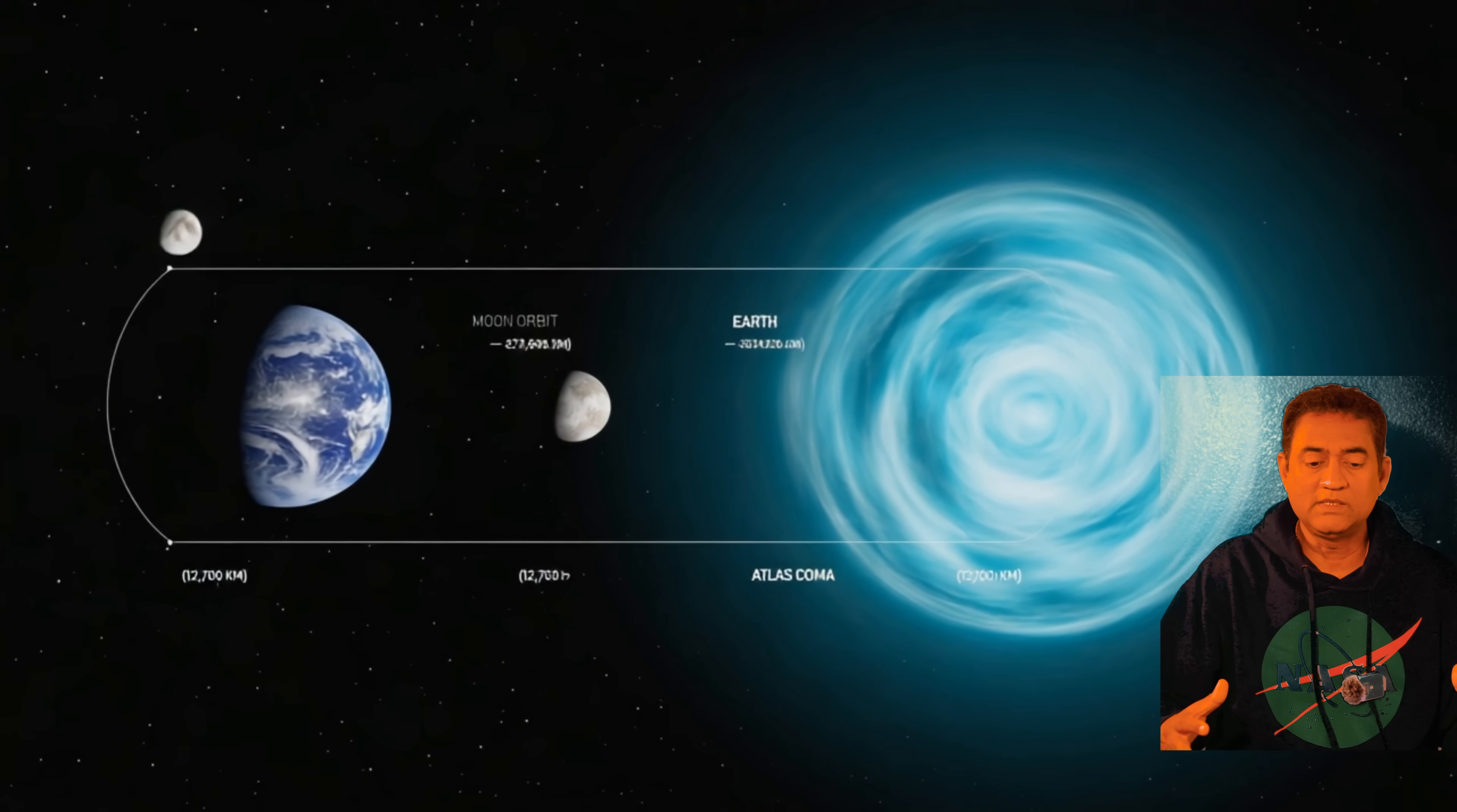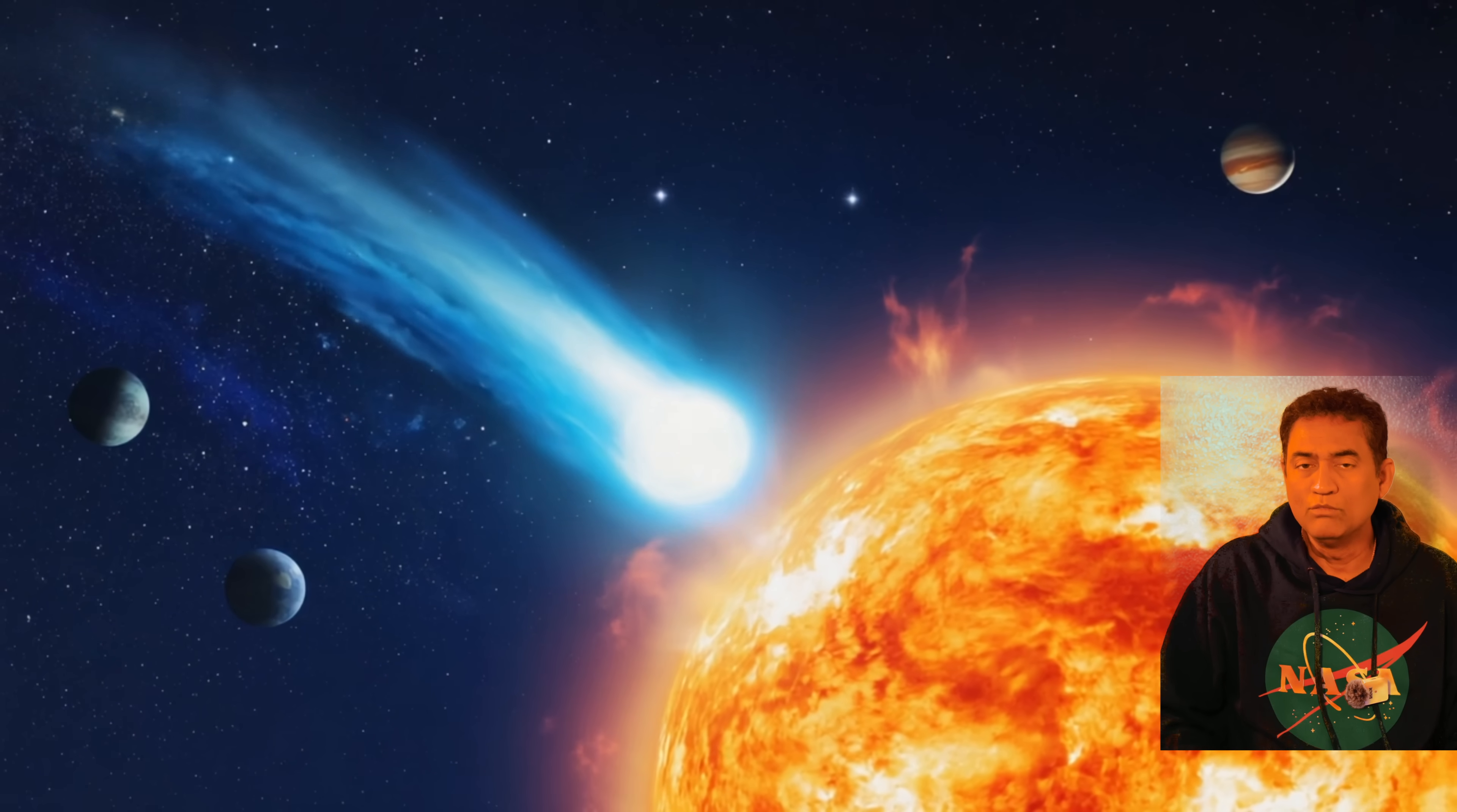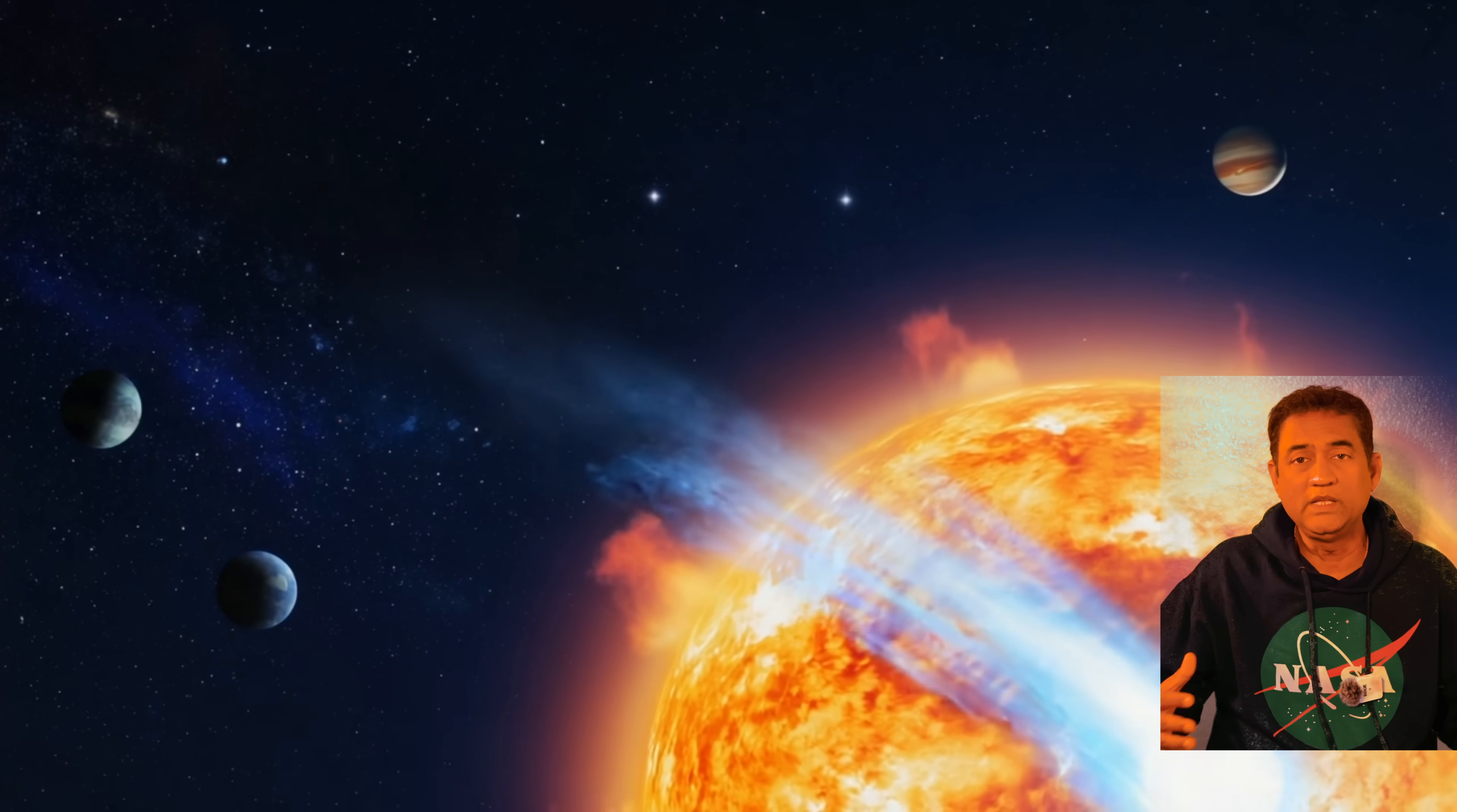Why is Atlas so enormous? The answer is chemistry. Most comets that we see and the ones that I pictured, they're all water-ice dominated. They release water vapor as they get closer to the Sun. But Atlas is different.